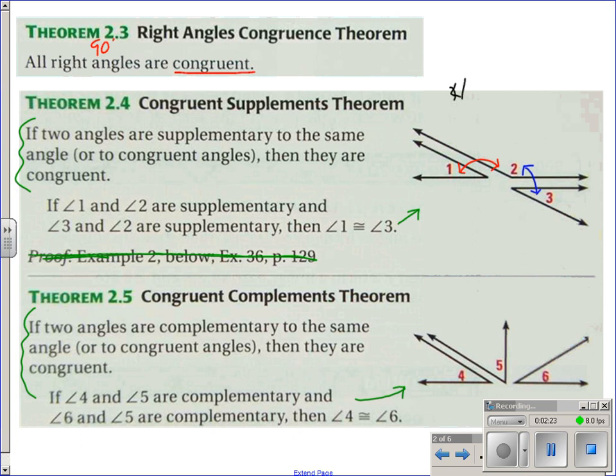So, just as this is a very informal proof, but this is basically the proof. Angle 1 plus angle 2 equals 180. Angle 2 plus angle 3 also equals 180. Both of these things equal 180. So that means angle 1 plus angle 2 equals angle 2 plus angle 3. And then, with the subtraction property of equality, you subtract angle 2 from both sides. You've got angles 1 and 3 congruent.